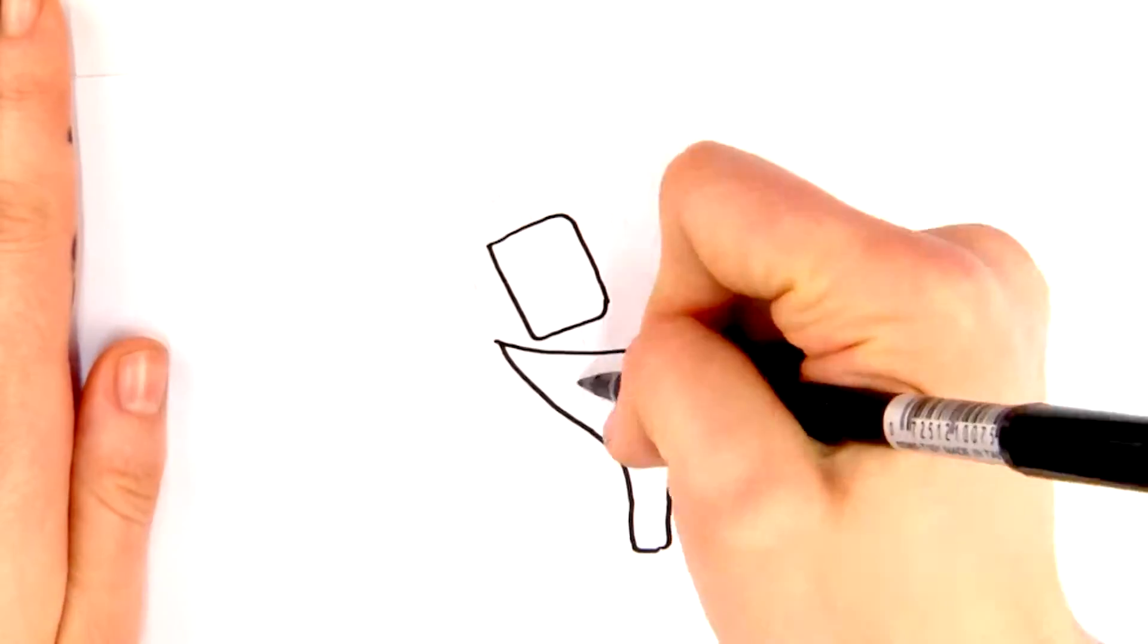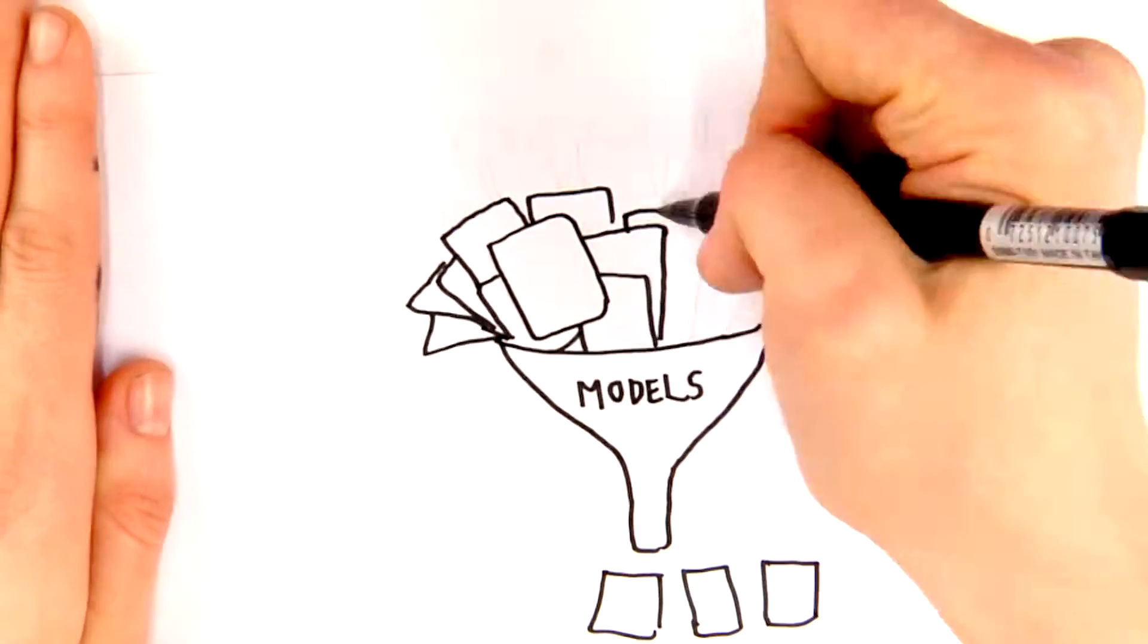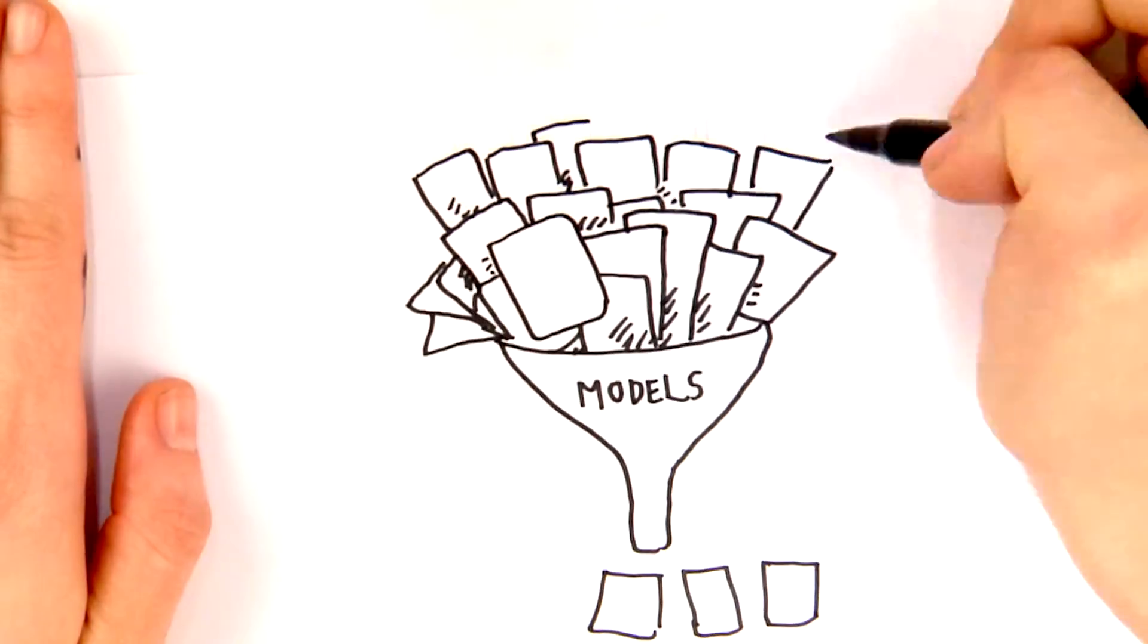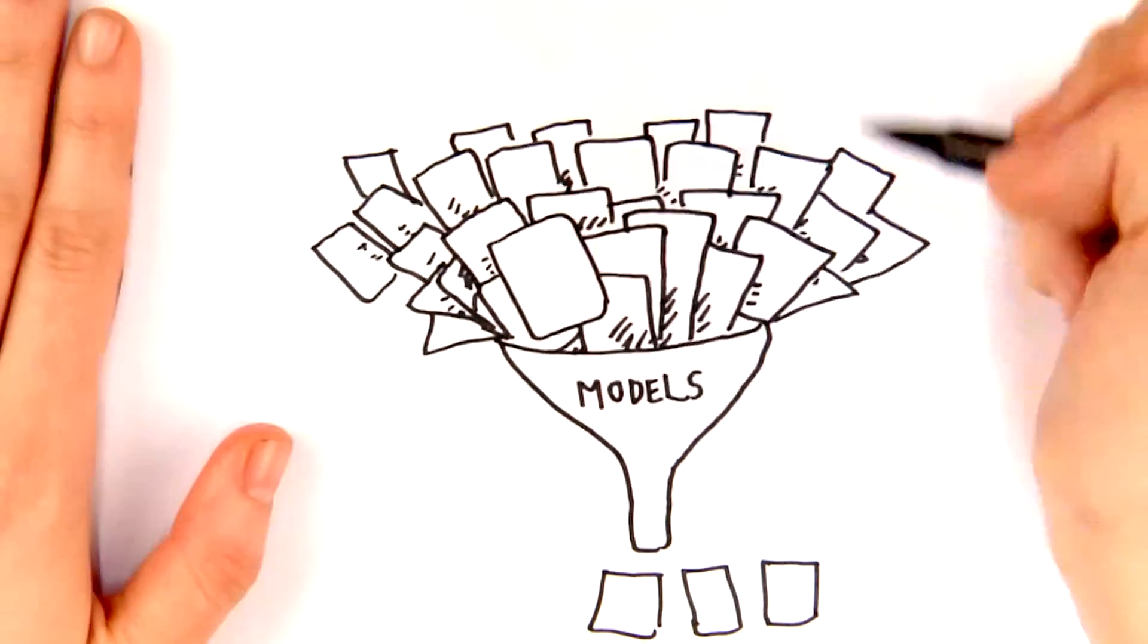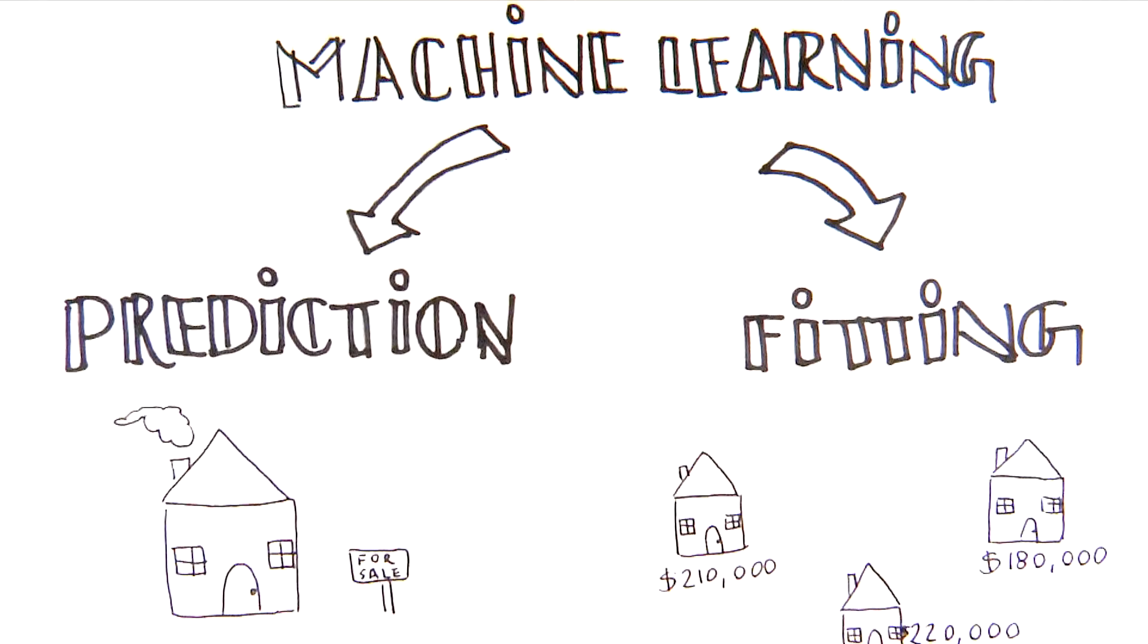In order for a model to get good at making predictions, it must see examples of the data and its correct labels. The process by which a model gets better at making predictions is called fitting. In the housing price example, this would involve showing the model several houses which have sold and their actual selling price. After fitting to this data, the model would be better at predicting the price of unsold houses.